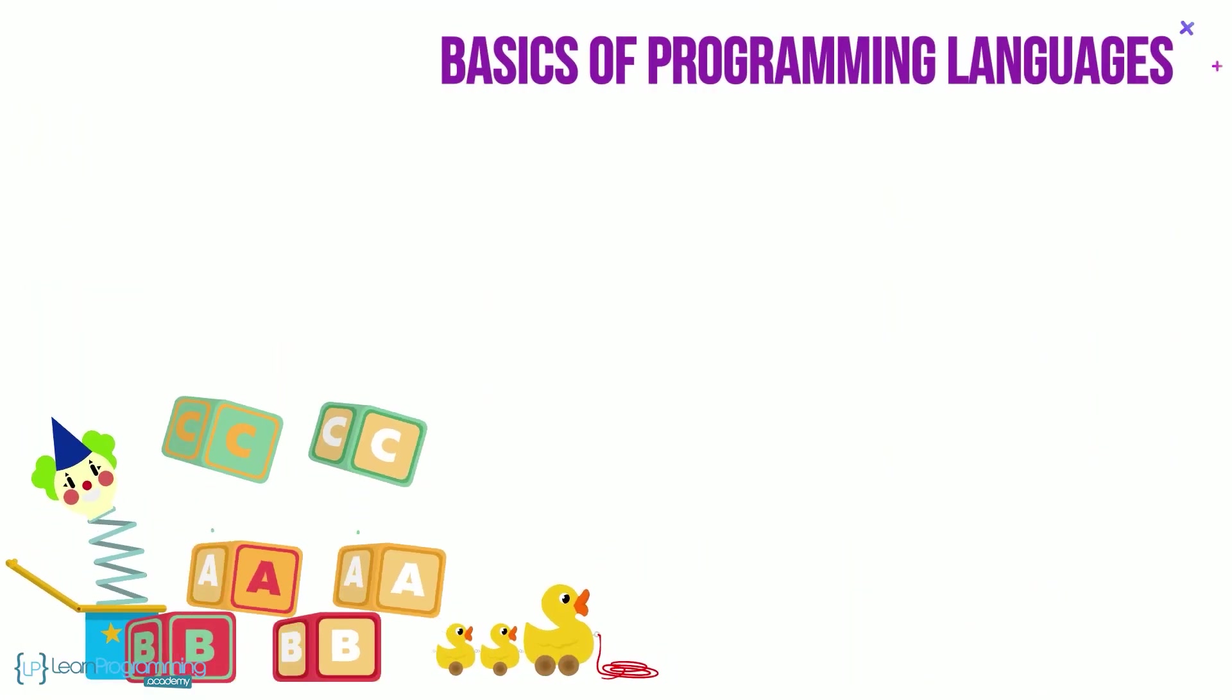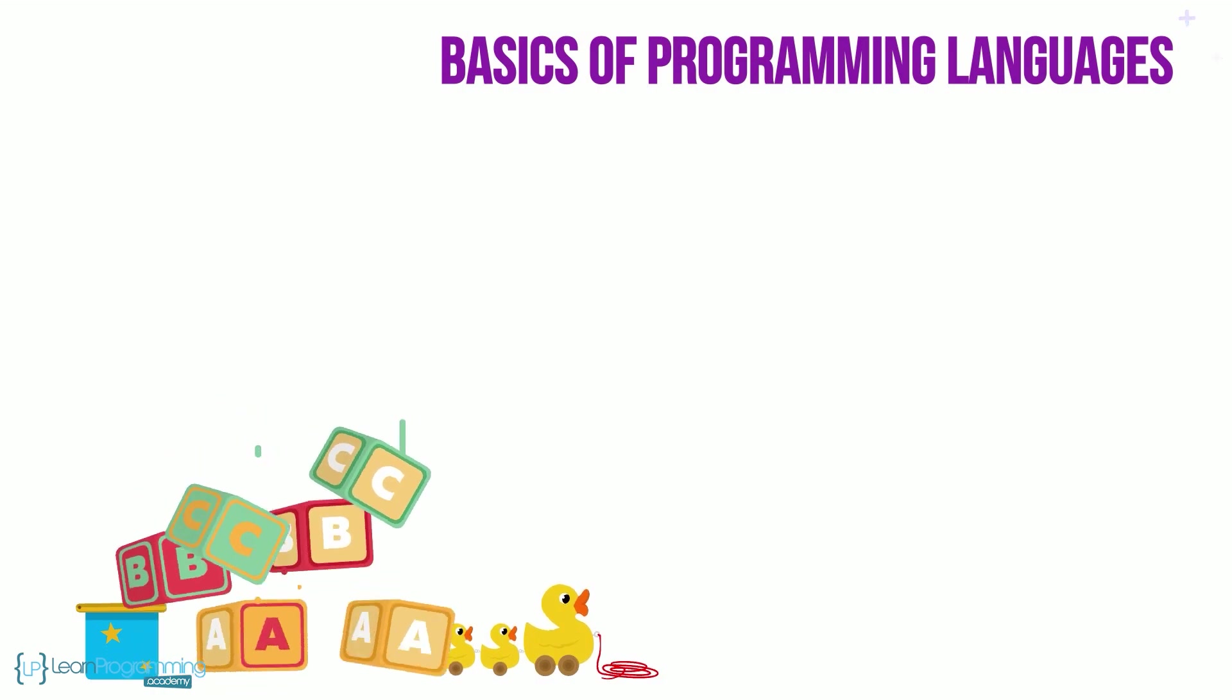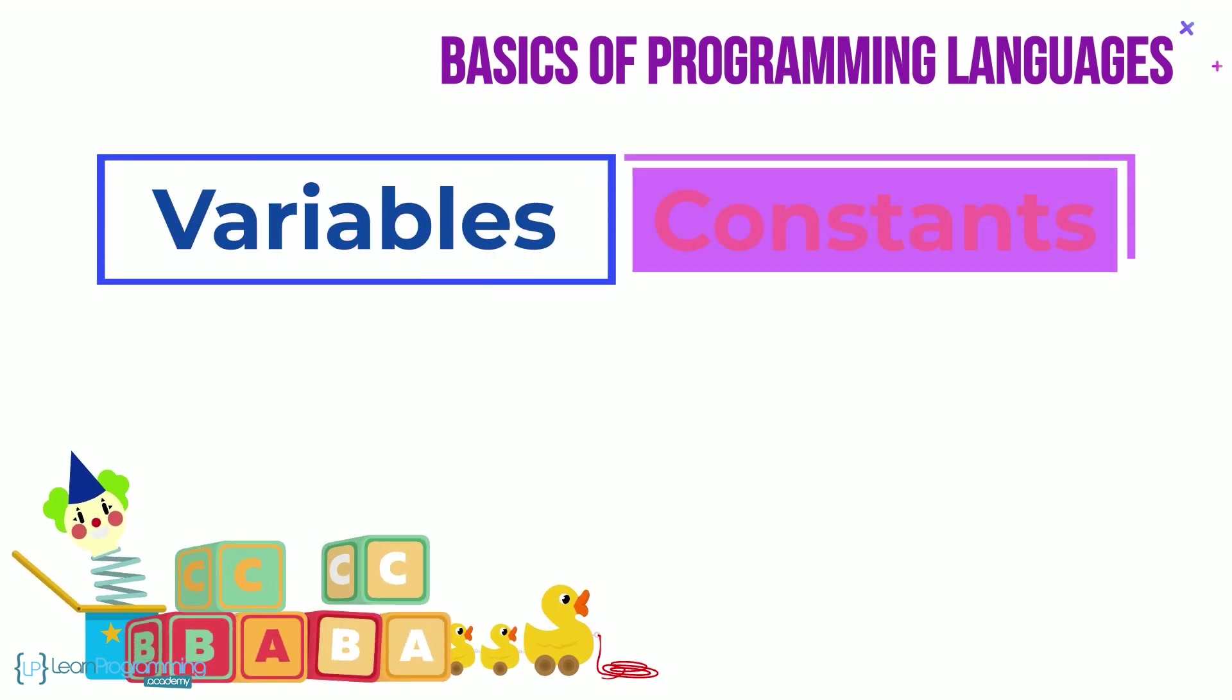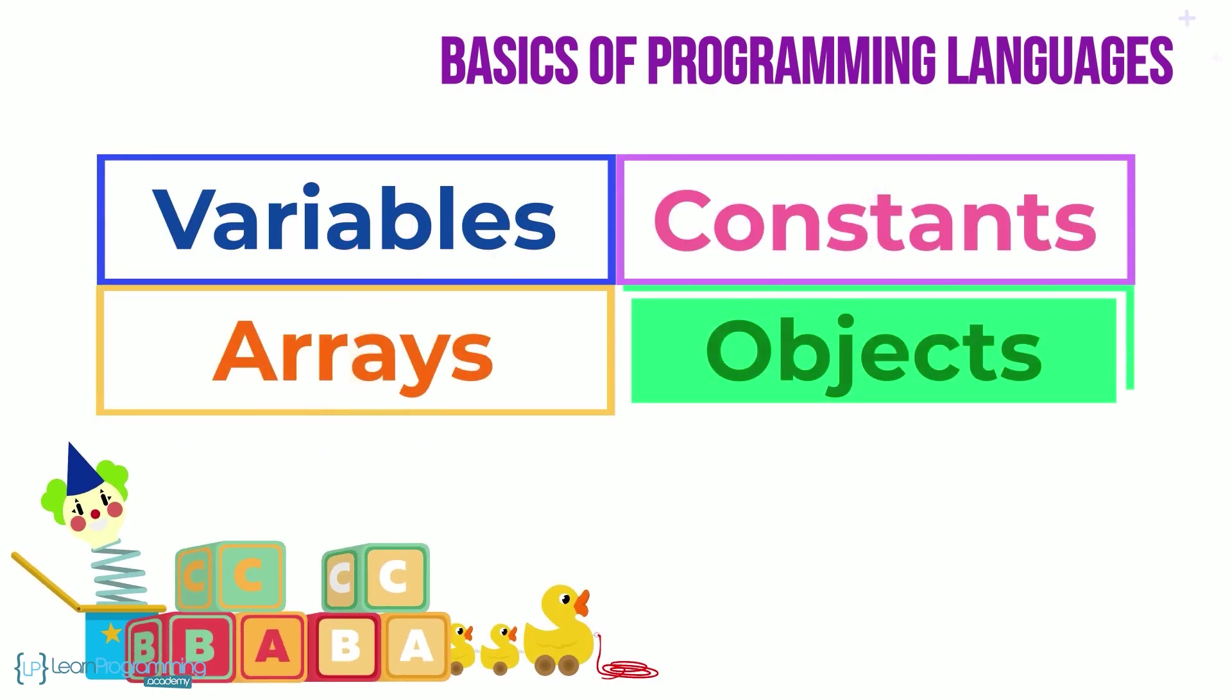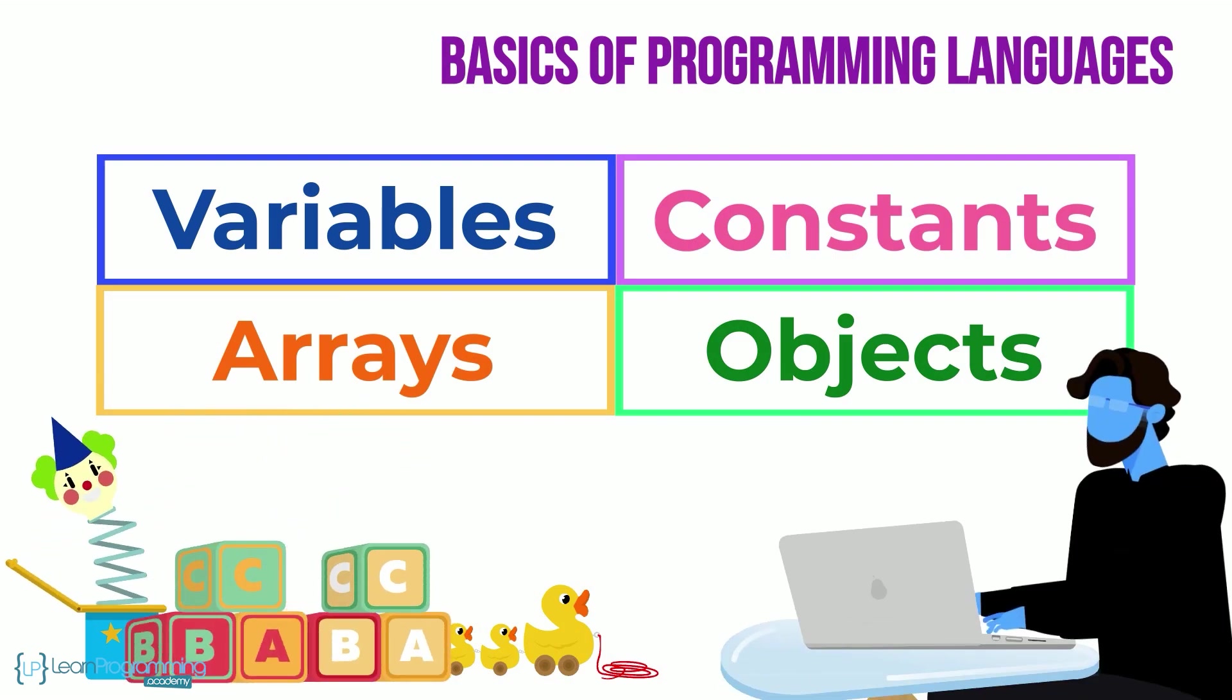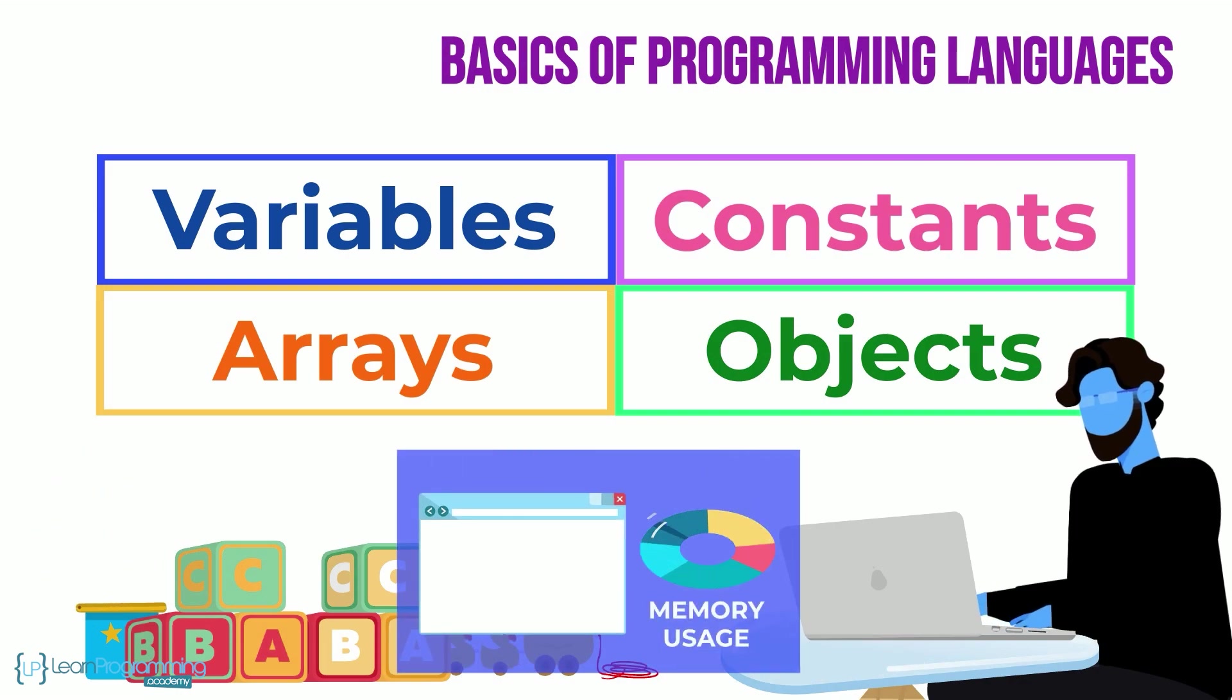Starting with the basics of most programming languages, concepts of variables, constants, arrays and objects are the building blocks for that language. Each of these four concepts are ways in which a programmer reserves memory RAM to be used in the program to store data.